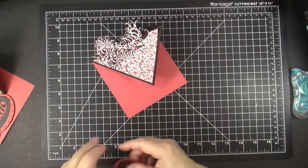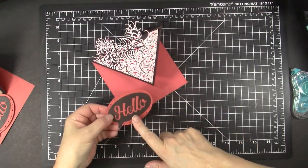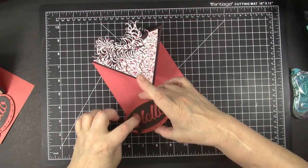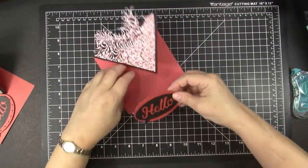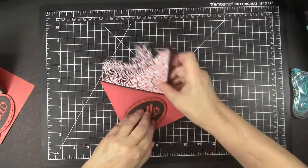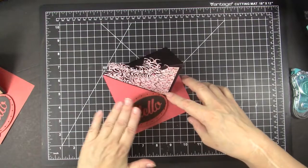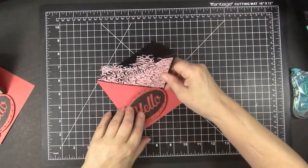And I have die cut Hello, which is a Tonic Studios die, and placed it on the contrasting color cut out with a Gina Marie Designs oval. And I'm going to place that here, and then the easel will be held up with that, but then can lay flat to mail.